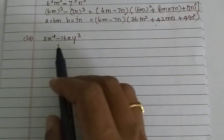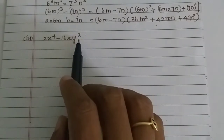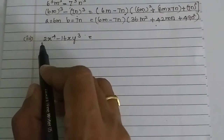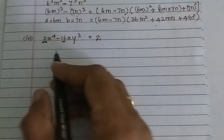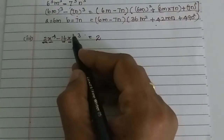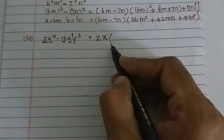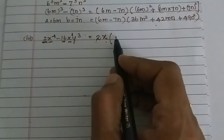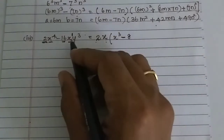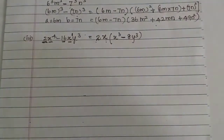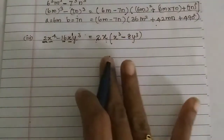Third subdivision: 2x⁴ - 16xy³. There is a power 4 and cube here. First, take common factors. The coefficients are 2 and 16 - both divisible by 2. Also x⁴ and x are both divisible by x. So 2x is common. Dividing: 2÷2=1, x⁴÷x=x³, and 16÷2=8, giving 2x(x³ - 8y³).